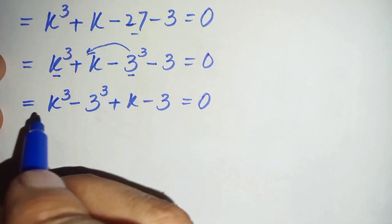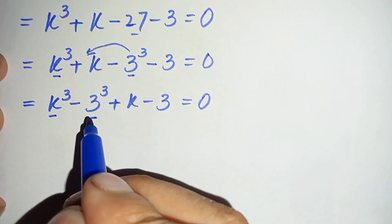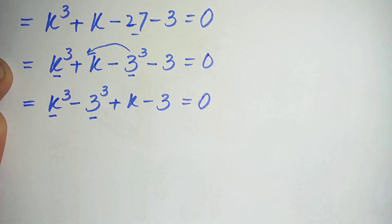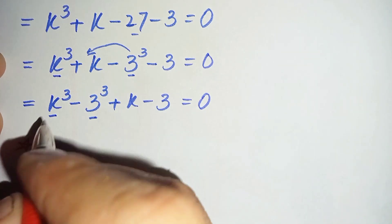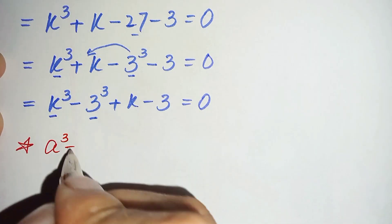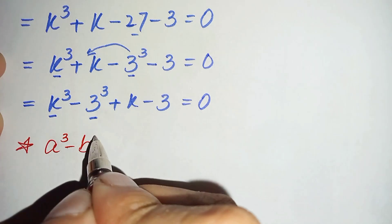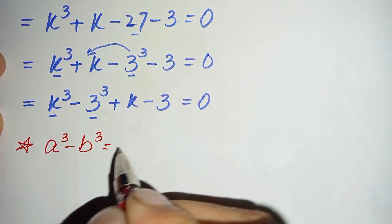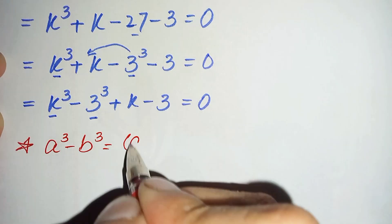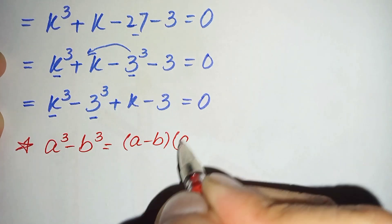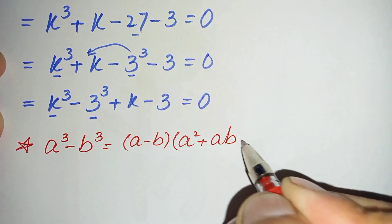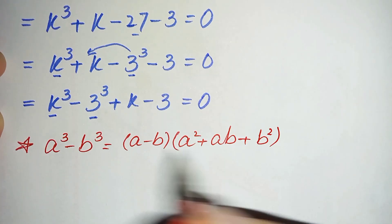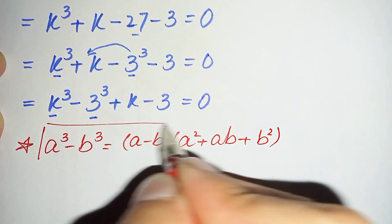In the first two terms, k cube minus 3 cube, we will use a cubic identity. The identity is: a cube minus b cube is equal to a minus b, times a square plus a b plus b square.